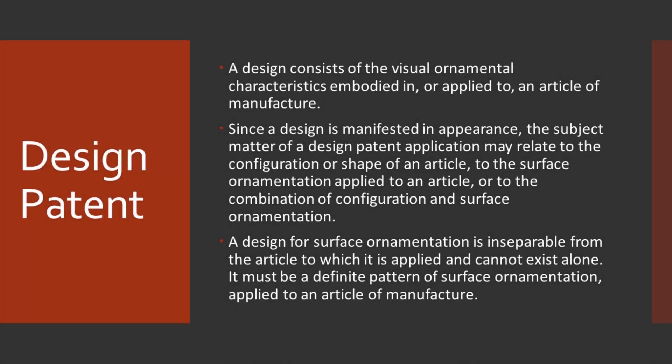Next is design patents. As we just discussed, they essentially protect the way an article looks. On the application page for design patents, we get a little bit more detail. A design is the visual ornamental characteristics either embodied in or applied to an article of manufacture. It's not about how it works or what its function is — that would be its utility.